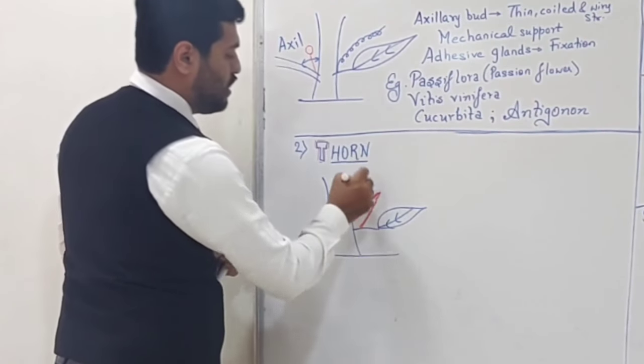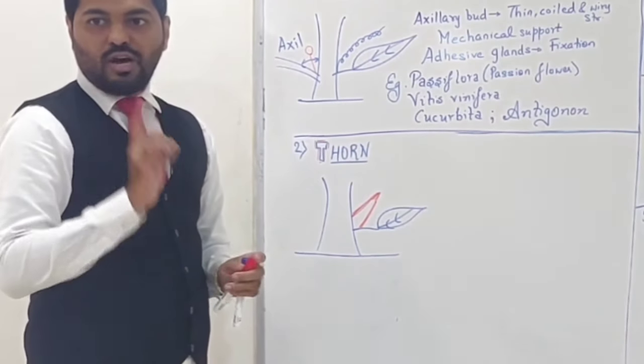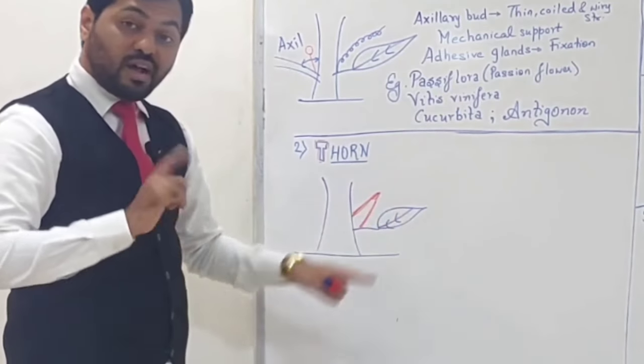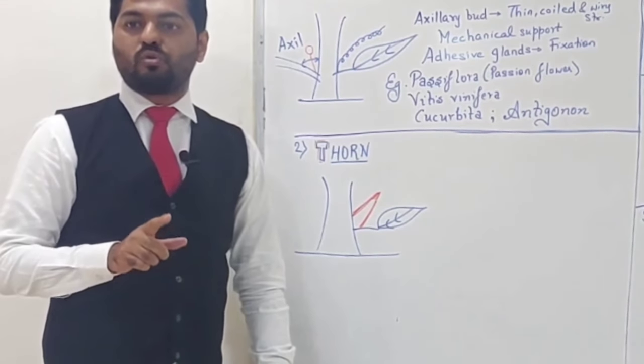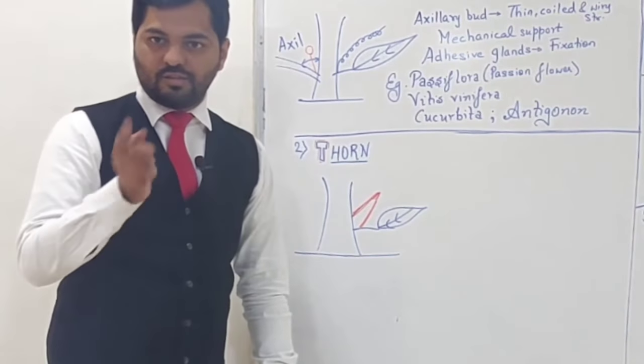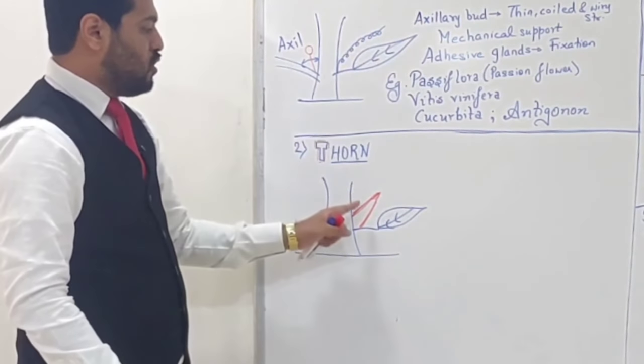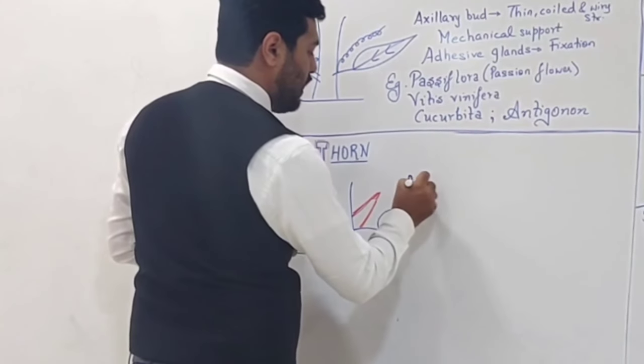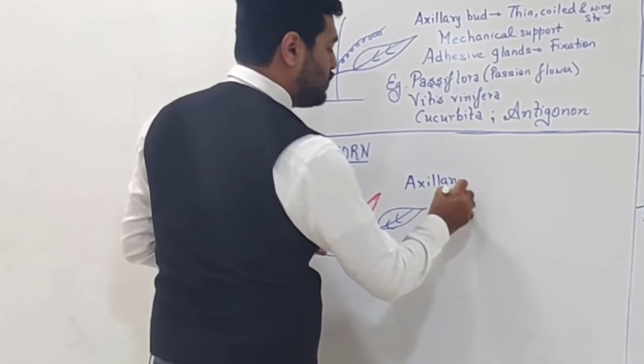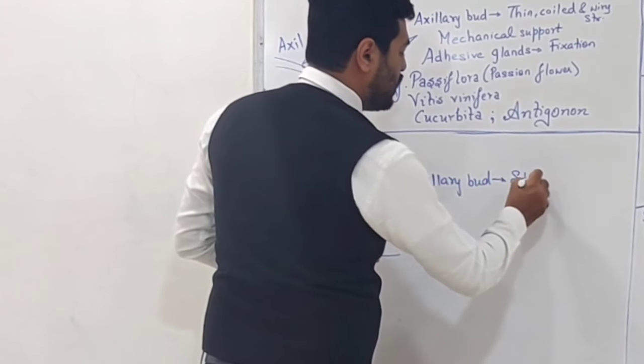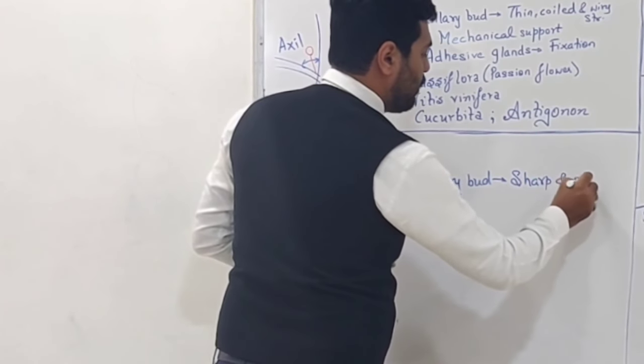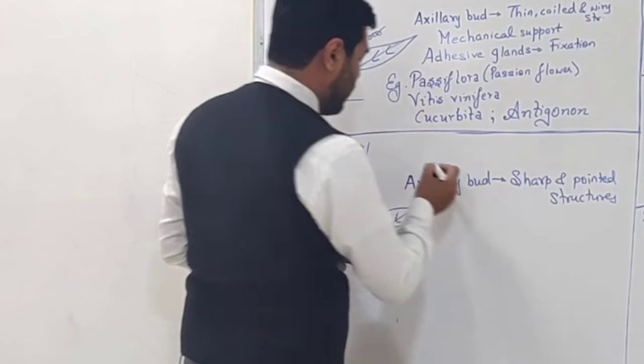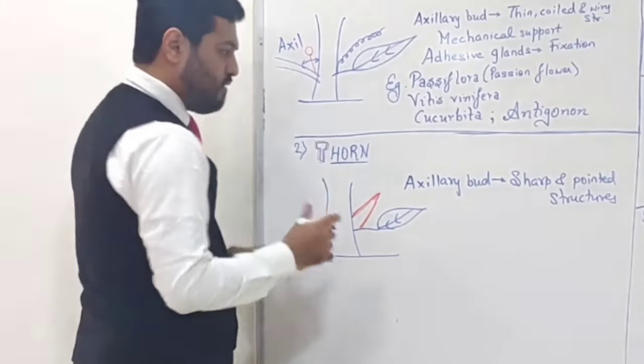Next example: the axillary bud develops into a sharp and pointed structure. This is known as thorn. If the stem modifies, it's called thorn. If the leaf becomes sharp and pointed, it's called spine. Leaf modification is called spine, stem modification is called thorn. We'll study leaf spine in leaf modification.